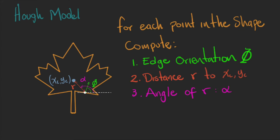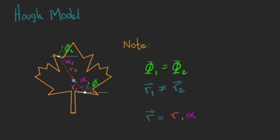We will loop over the shape and store these three values in a table. We need them because it's possible that some points in the shape share the same edge orientation, and we will store all these values based on that.